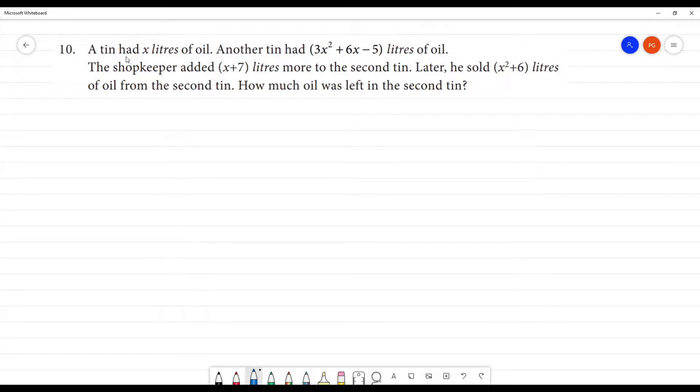A tin had x liters of oil, another tin had 3x² + 6x - 5 liters of oil. The shopkeeper added x + 7 liters more to the second tin.